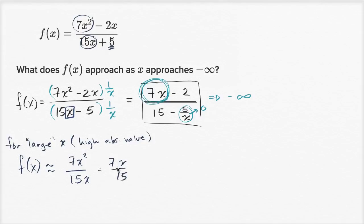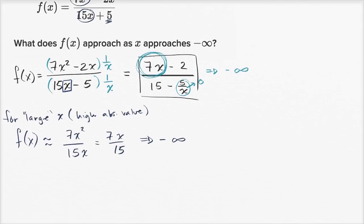Even with that simplified form, think about what happens when x becomes very, very negative: you get more and more negative values for f of x. So f of x is going to approach negative infinity as x goes to negative infinity.